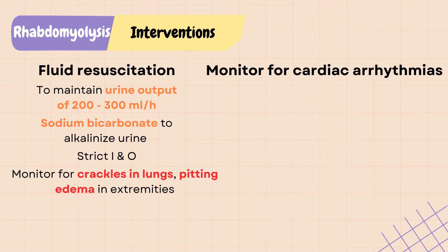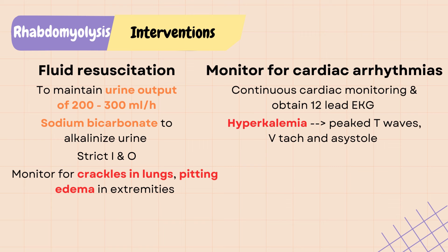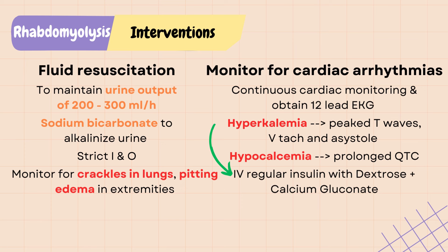It is important to monitor for cardiac arrhythmias due to potassium and calcium imbalances. Place patients on continuous cardiac monitoring and obtain a 12-lead EKG to monitor for peaked T-waves, V-tach, and asystole seen in hyperkalemia, or prolonged QTc seen in hypocalcemia. Standard treatment for hyperkalemia includes IV regular insulin with dextrose to push potassium back into cells, and calcium gluconate infusion to stabilize the cardiac membrane and prevent arrhythmia.